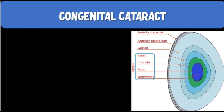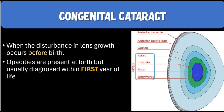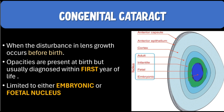What is a congenital cataract? When the disturbance in lens growth occurs before birth, the child is actually born with a congenital cataract. These opacities are present at birth but the cataract is usually diagnosed within the first year of life. Because the disturbance occurs before birth, the opacity is also limited to the embryonic and the fetal nucleus.